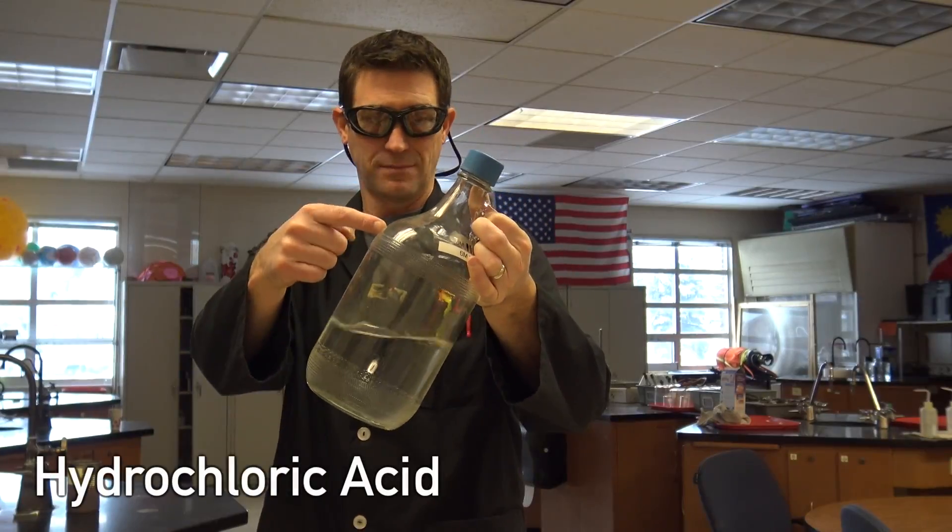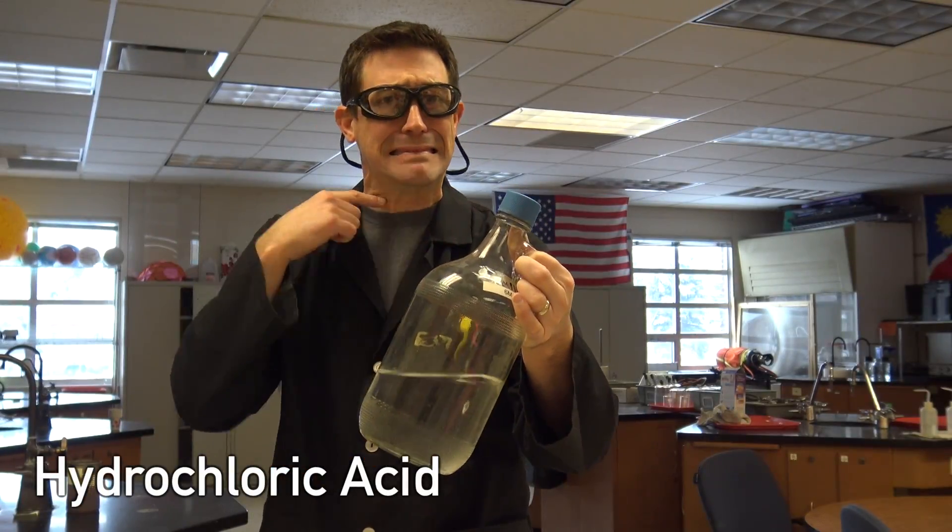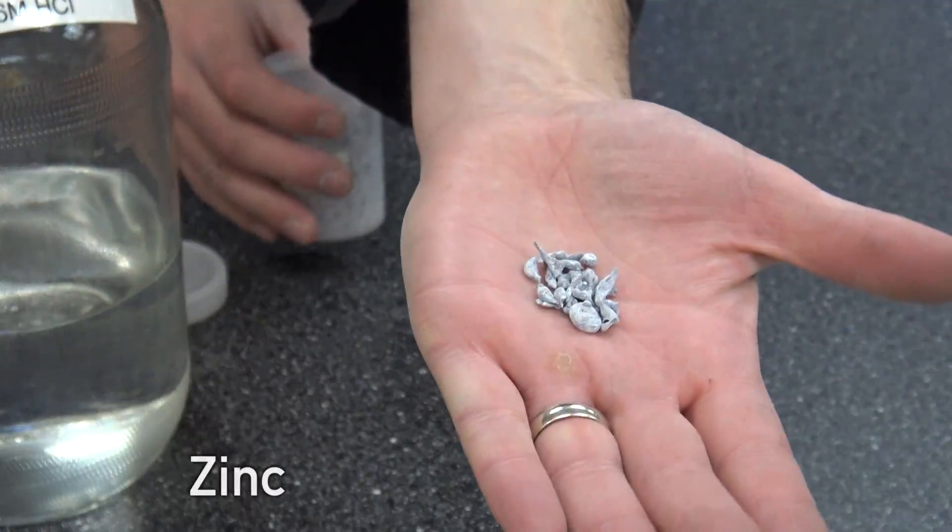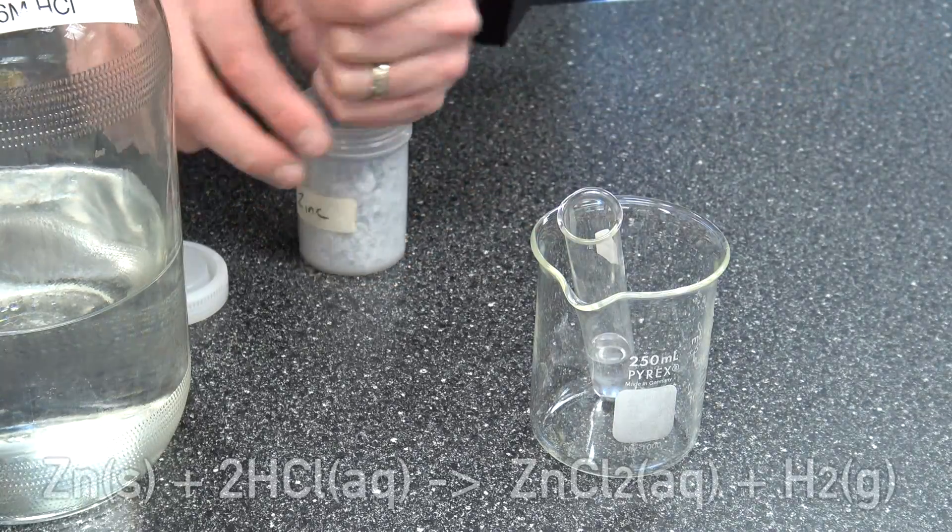Now we're gonna soak this in hydrochloric acid. I'm using six molar hydrochloric acid but you could use three molar. Now hydrochloric acid dissolves the zinc. Here I'm gonna prove it.